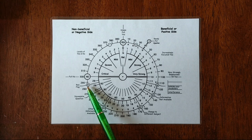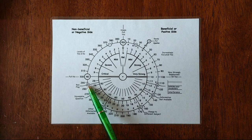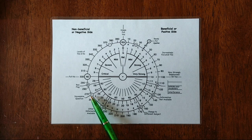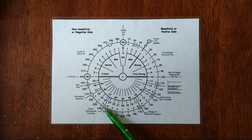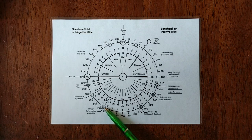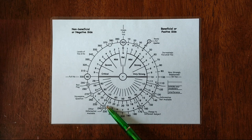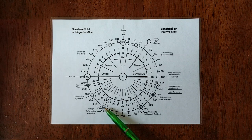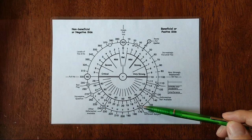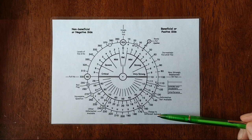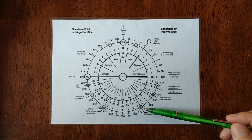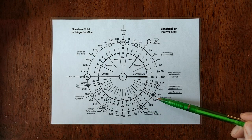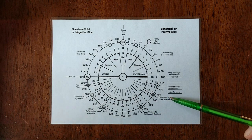The first one is called red flag, which means you need to be careful what you are dowsing at this moment. The second one is called incomplete question, it means you need more data for the good answer. The third one is called other information is available, so it means it suggests to ask more questions to get about the subject to get more detailed information. The next one is change to different subjects, it suggests to change the topic of what you are dowsing to get to the point of what you are actually asking for.